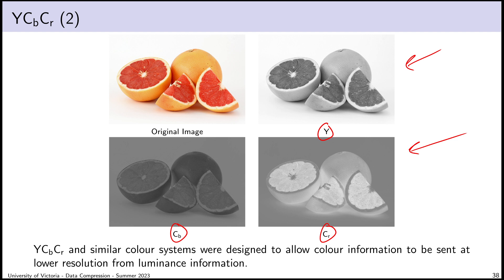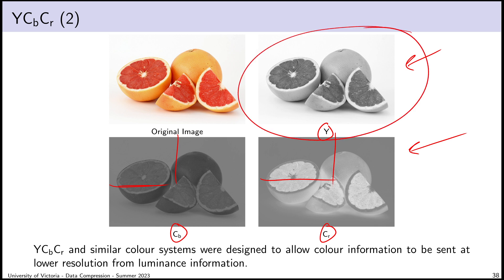YCbCr is a descendant of YUV, which was designed when television went from black and white to color. The Y channel contains all the important stuff. If I want to save bandwidth, I can cut down the Cb and Cr channels — say, to half their original resolution — and maybe nobody would notice. This is actually done in most digital video you watch: one color plane at full resolution, the other two at about half resolution. The fact that viewers haven't noticed proves subsampling is a pretty clever lossy compression technique.